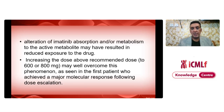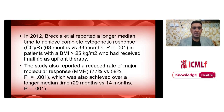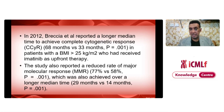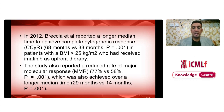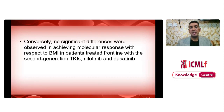Alteration of imatinib absorption or metabolism to the active metabolite may result in reduced drug exposure. Increasing the dose above the recommended level to 600 or 800 mg may overcome this, as seen in our first patient. In 2012, Prussia et al. reported a longer median time to achieve complete cytogenetic response — 68 versus 33 months — in patients with BMI above 25 kg per meter square on imatinib frontline. They also reported a reduced rate of major molecular response, 77% versus 58%, achieved over a longer median time of 29 versus 14 months. Conversely, no significant differences were observed with second-generation TKIs nilotinib and dasatinib with respect to BMI.